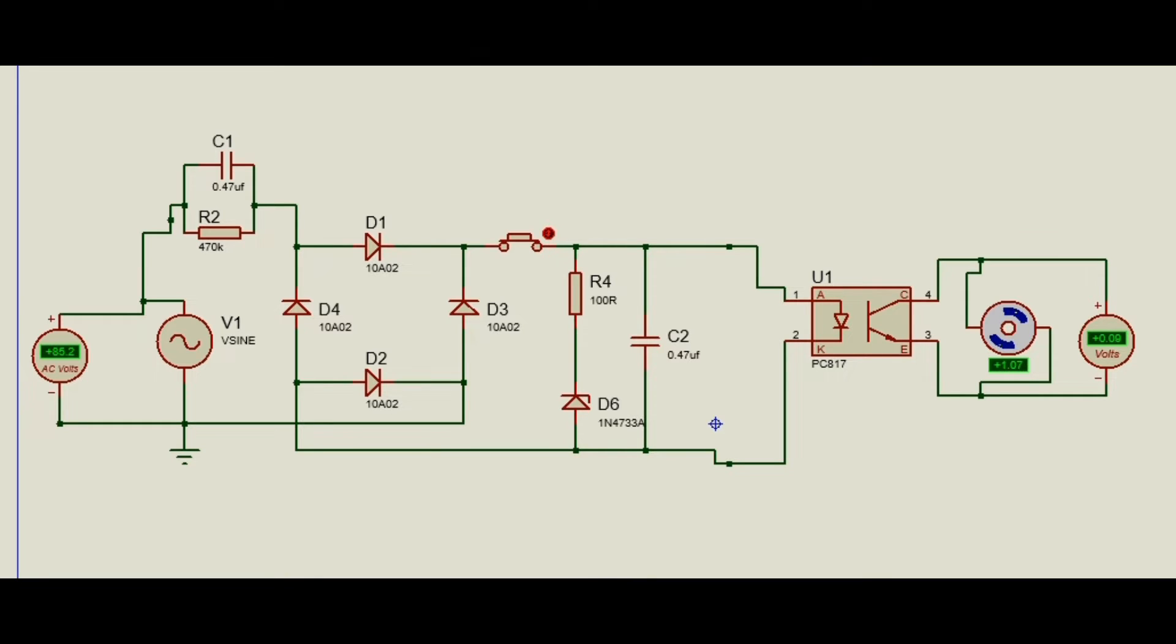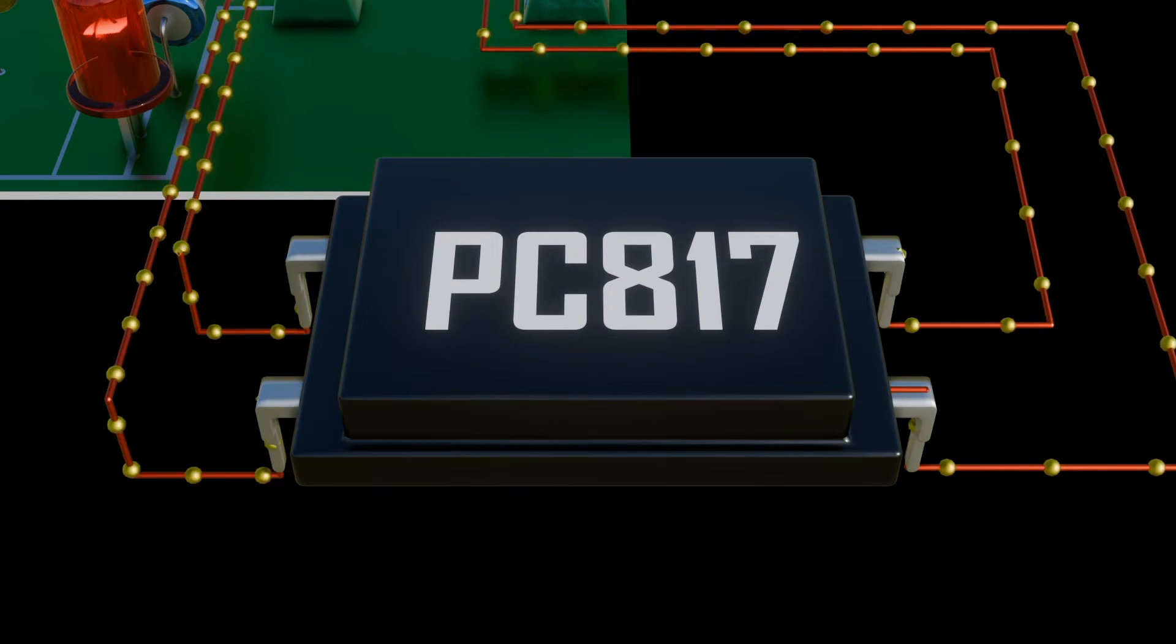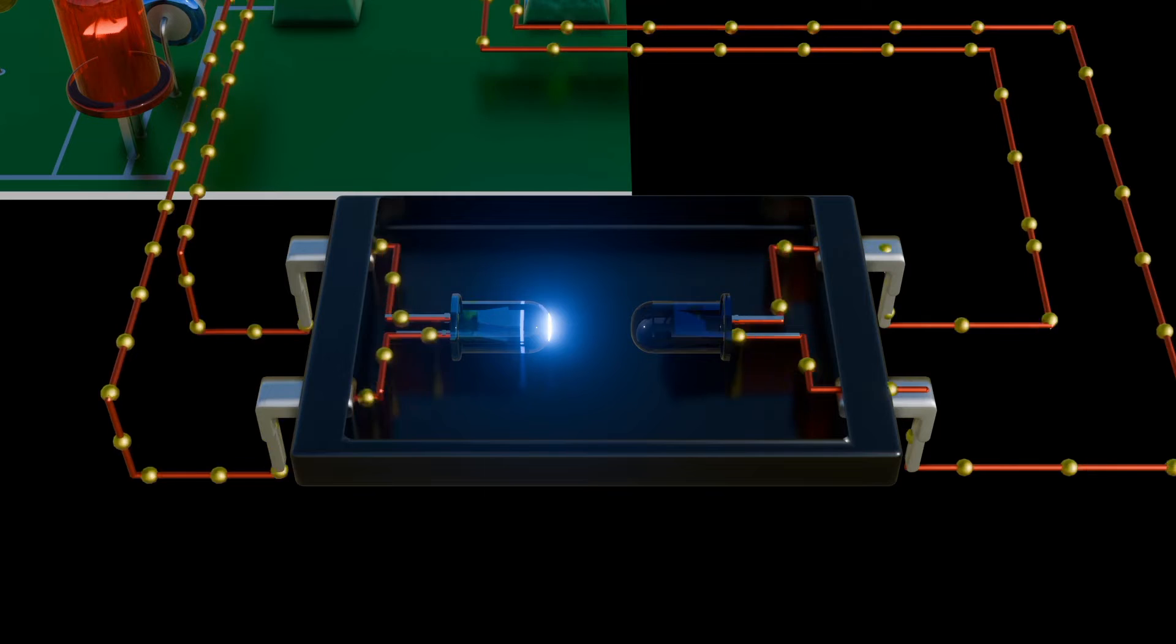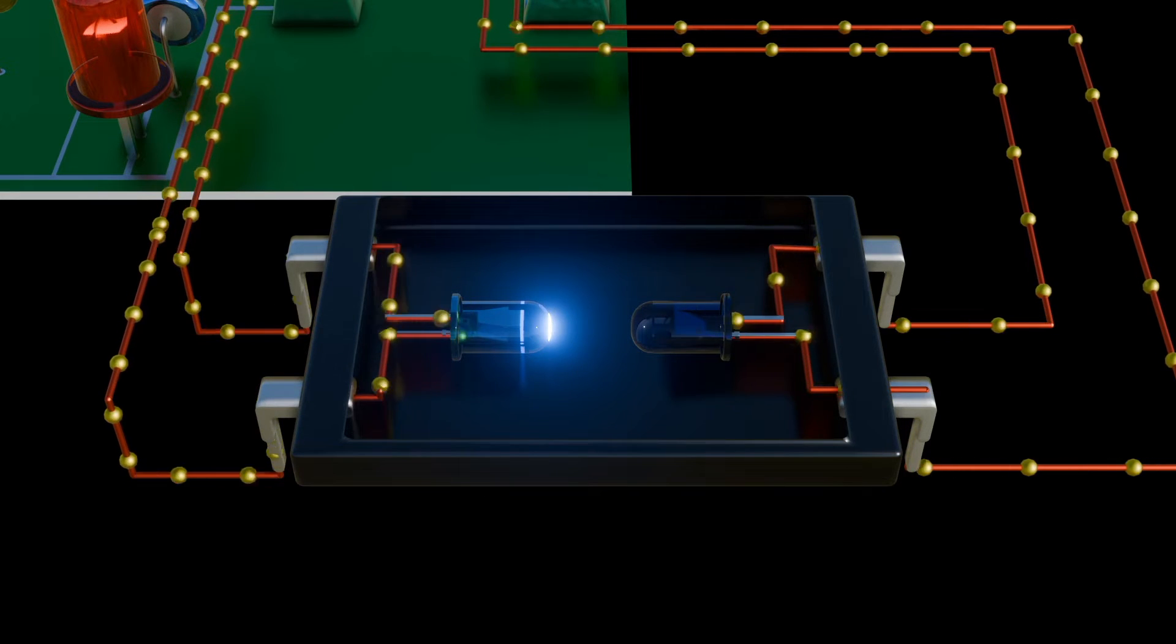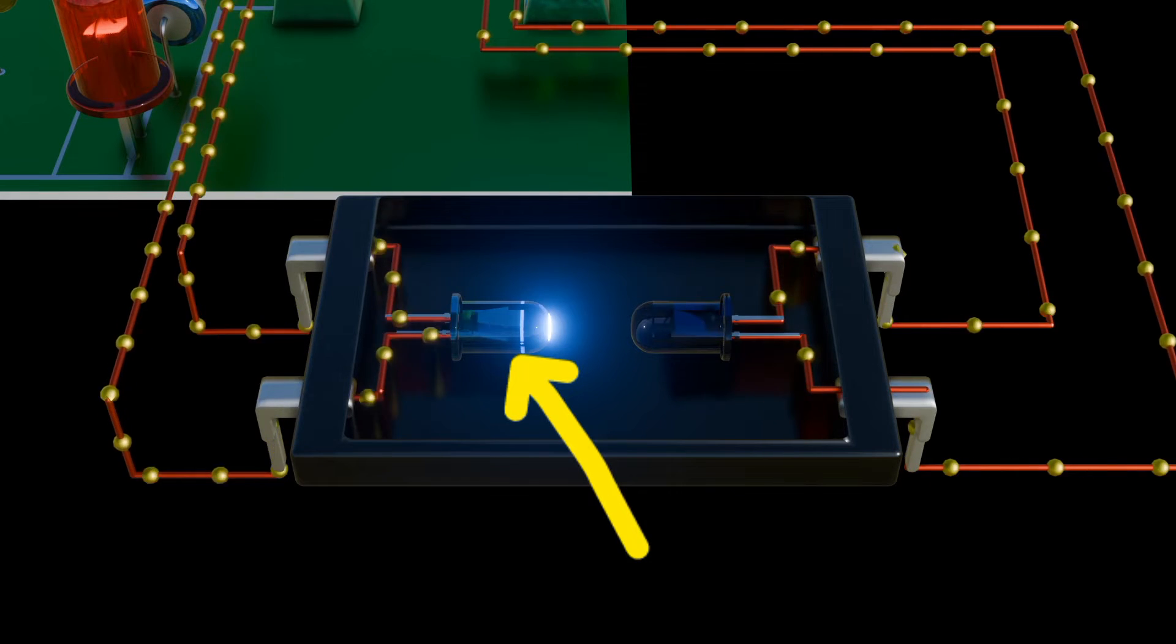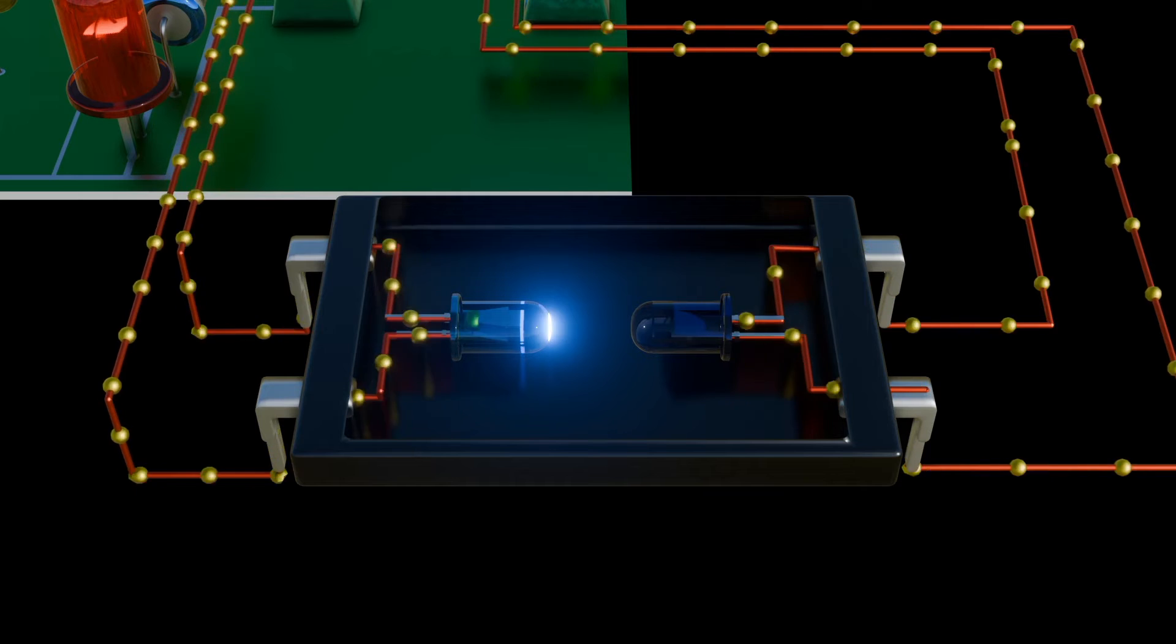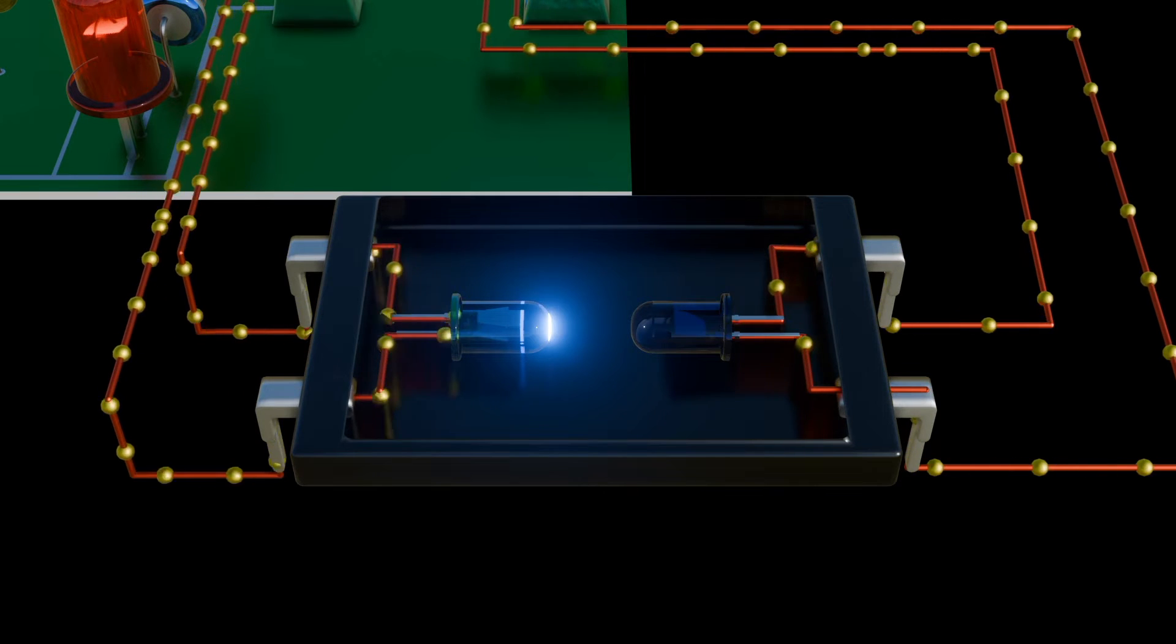Then how does optocoupler works? Optocouplers consist of two main parts. LED, that is light emitting diode on the input side. The LED converts the electrical signal into light.